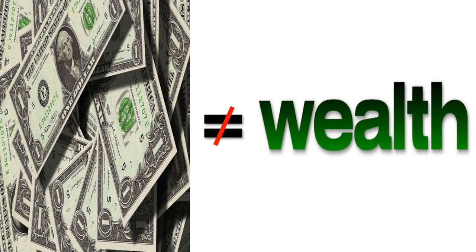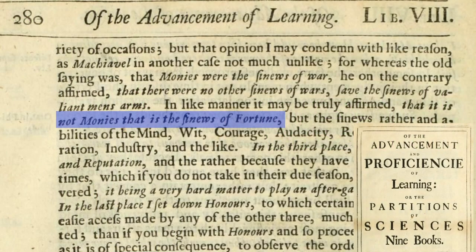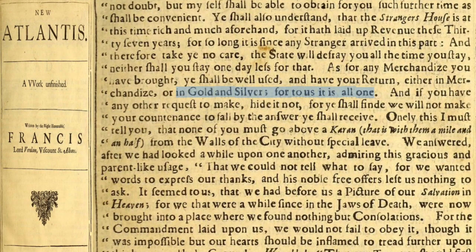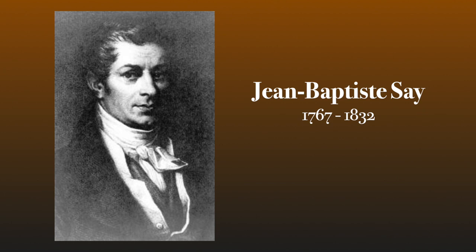Bacon rejected the idea that money constituted wealth. He wrote: 'It is not monies that are the sinews of fortune, but it is the sinews and steel of men's minds — wit, courage, audacity, resolution, temper, industry, and the like.' Jean-Baptiste Say echoed Bacon's view, from New Atlantis, that money and goods were as one. According to Say, money is supply, and, like notes in the harmonic series, represents a previously generated frequency or value of goods produced in the past.